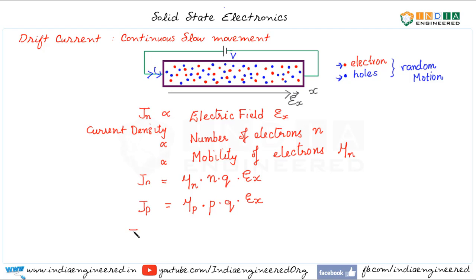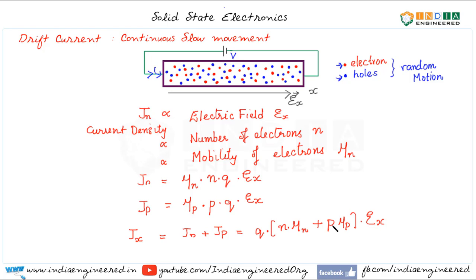The total current density in the x direction, Jx, is the sum of the electron drift current density and hole drift current density. Taking q common, we have Jx = q(n·mu_n + p·mu_p)·E_x. This simplifies to sigma times the applied electric field, where sigma is the conductivity. So drift current density has a simple relationship: Jx = sigma·E_x.